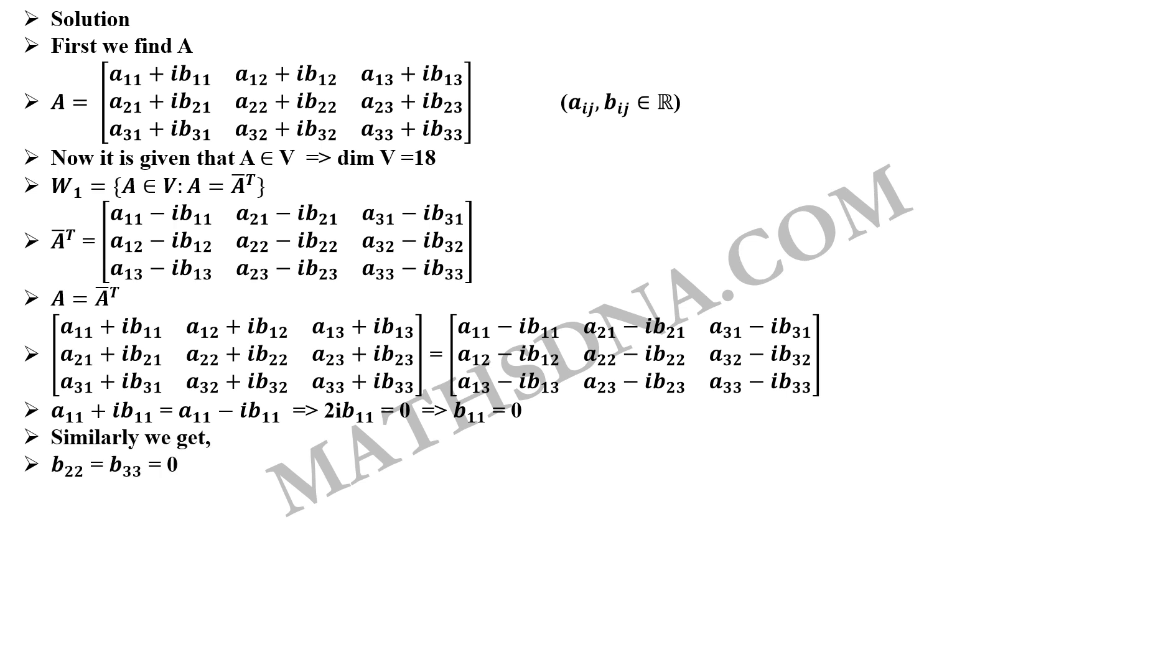Now, the value above the diagonal and below the diagonal. From the above matrix only we get that A12 plus iB12 equals to A21 minus iB21. This simplifies to A12 equals to A21 and B12 equals to minus B21 which further implies that Aij equals to Aji and Bij equals to minus Bji.